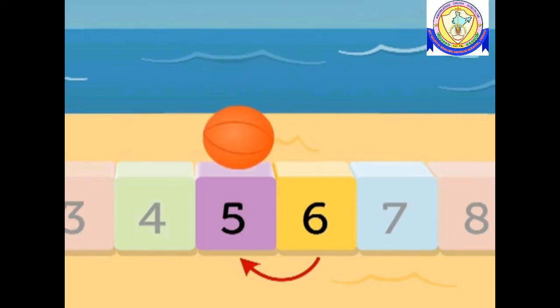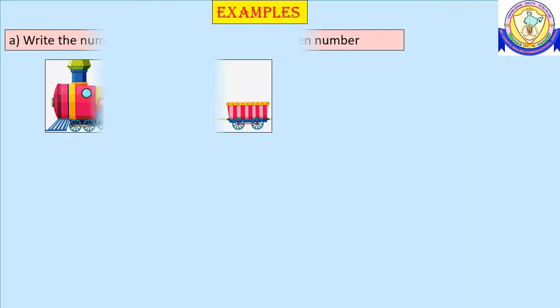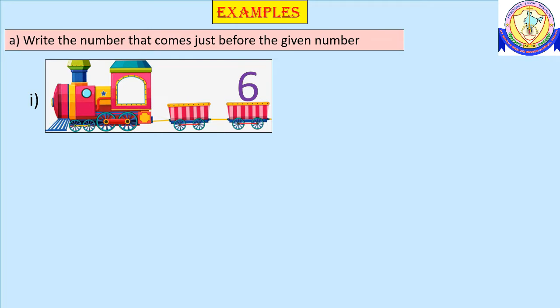Number five — thus five comes before six. Let's solve some examples. Write the number that comes just before the given number. We can see the number six. A number just before any number is to the left of it, or counting one number backwards, so we get number five. Here we have number nine, and if you count one number backwards, we get number eight.